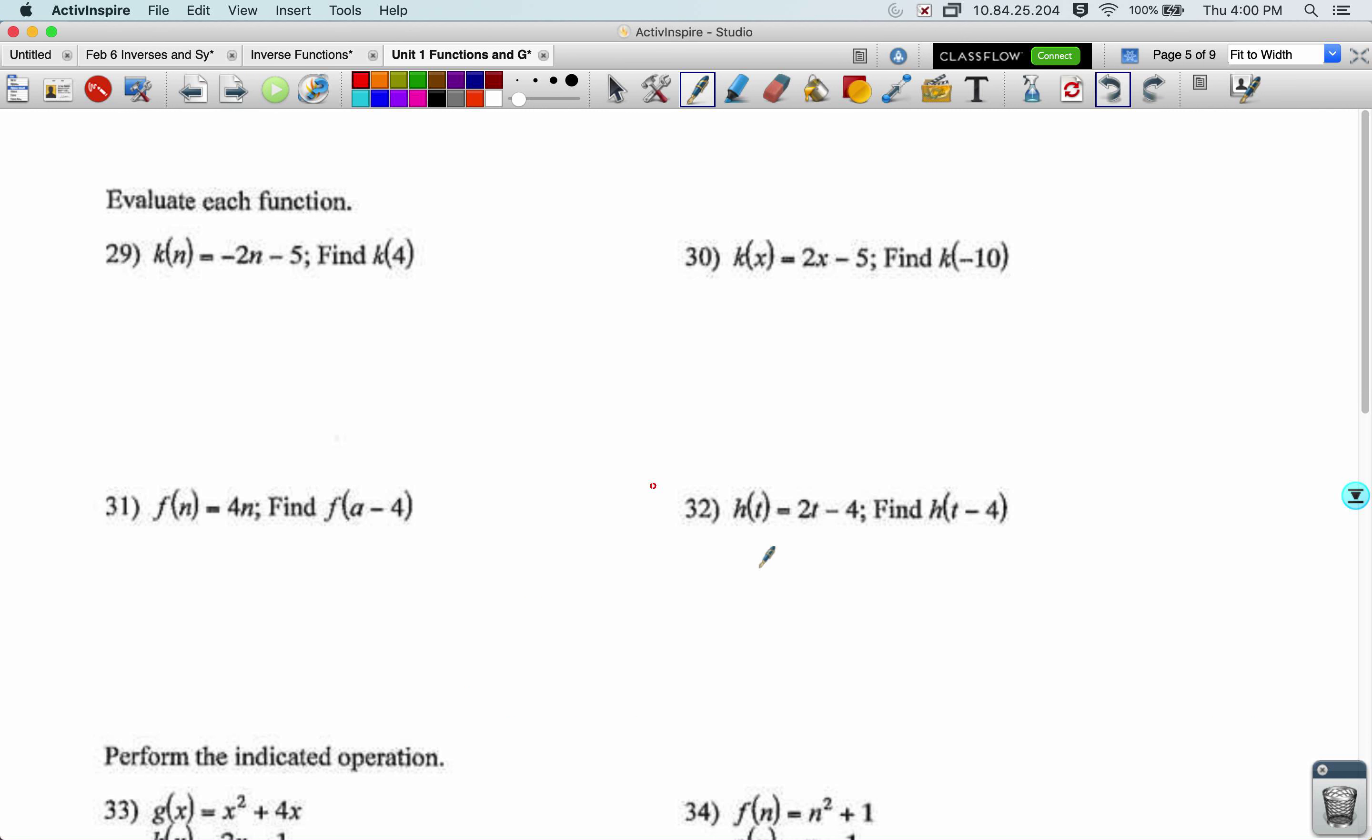All right, next page. We're going to evaluate each function. We get a definition for the function, then we get told at what value to plug in as our input to get an output. So k of n equals negative 2n minus 5. So k of 4 equals negative 2 times 4 minus 5. And now it's important to keep writing this left-hand side as k of 4 so we keep track of the input. That's the whole power of function notation is it tells you what we plugged in and then what we got out. In this one, we got negative 13 out.